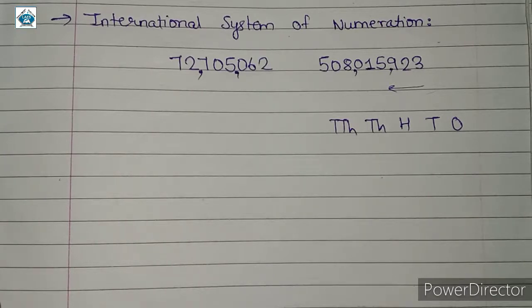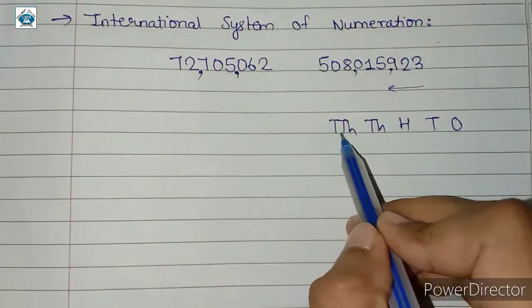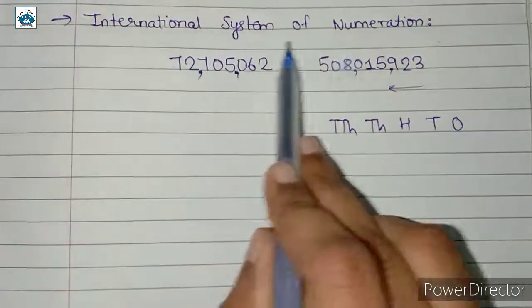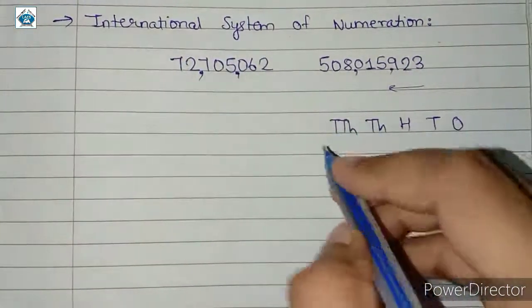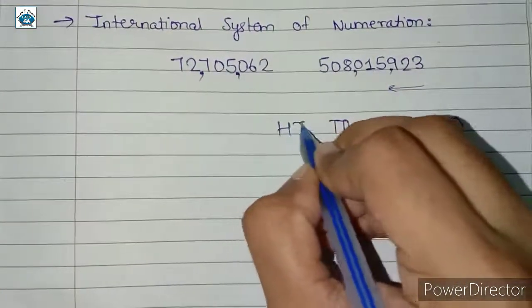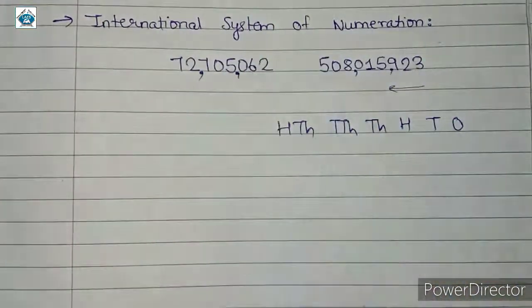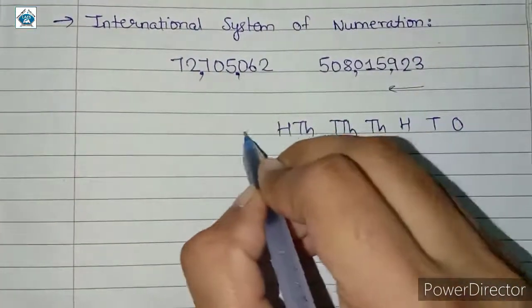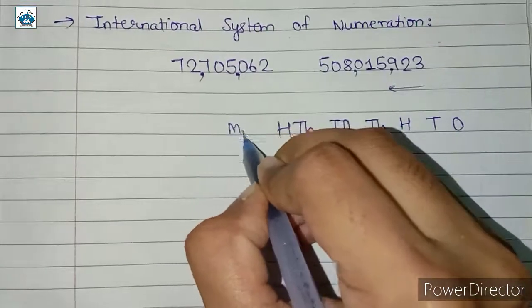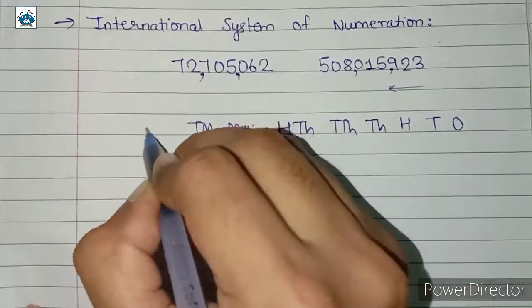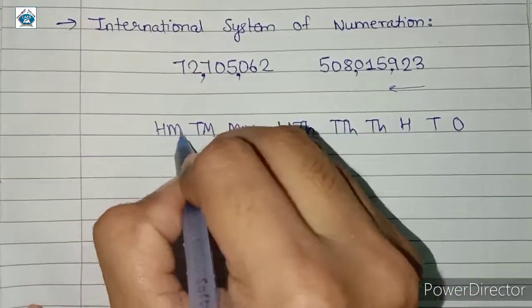In the Indian system, after ten-thousands we have lakh. But in the international system, after ten-thousands we have hundred-thousands — there is no lakh. After hundred-thousands we have million. After million there is ten-million, then hundred-million.